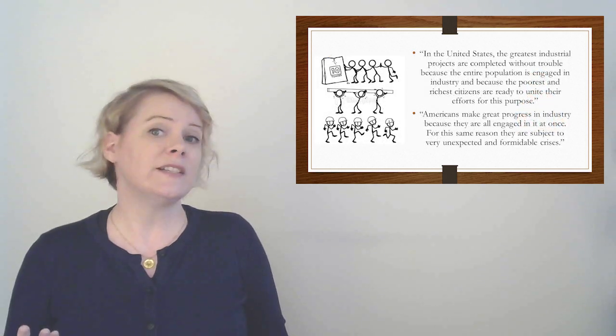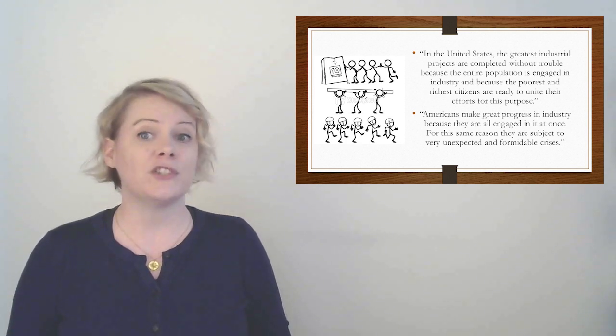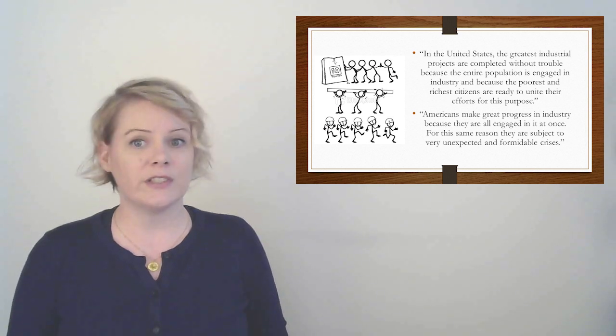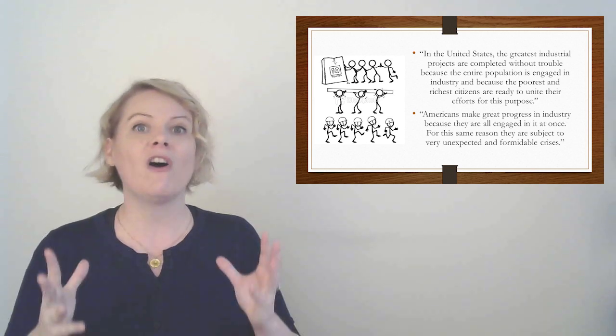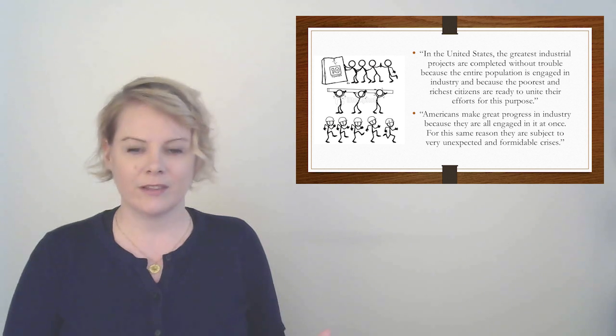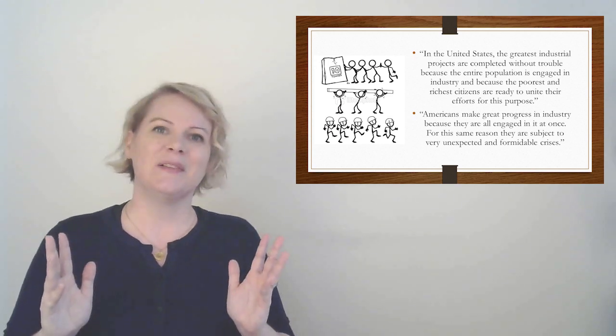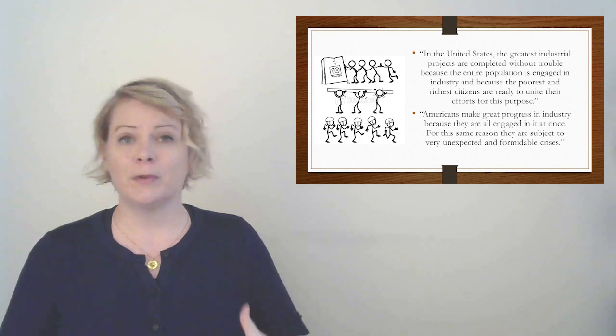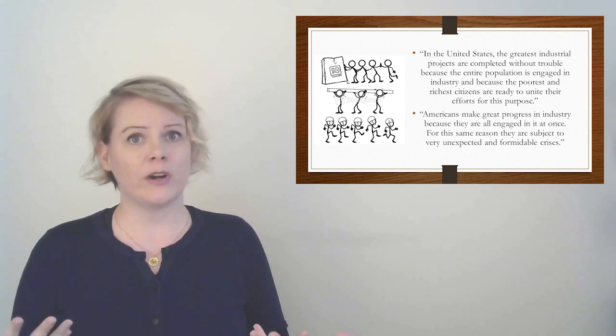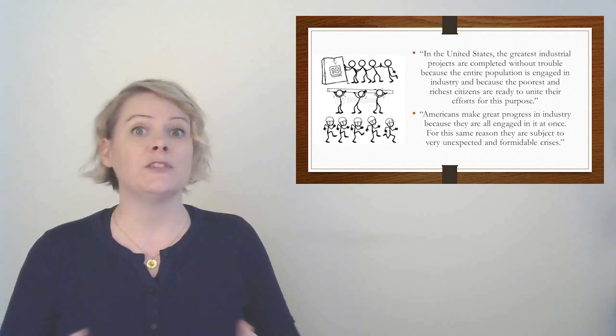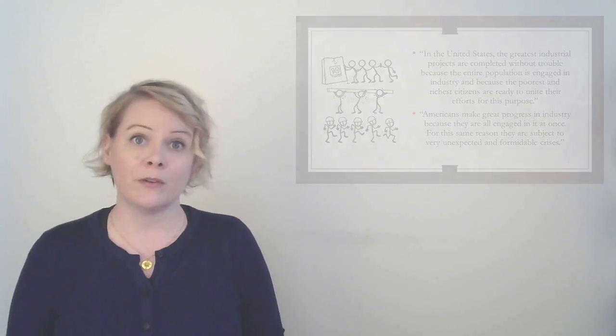And he says, you know, this might be because we're so young. It is only 50 years since the United States emerged from the colonial dependence in which England held it. Right. So he was only in America about 50 years after the revolution. The number of great fortunes is still very small and capital is still scarce. Yet no nation of the earth has made such swift progress in trade and industry as the Americans. And this is true. Americans were uniquely primed to embrace the industrial revolution. We all wanted jobs. We all wanted to get rich. We all wanted to participate in industry. We were not content chilling on our farms. We want in on the big money. So basically, in the United States, the greatest industrial projects are completed without trouble. Because the entire population is engaged in industry. And because the poorest and richest citizens are ready to unite in their efforts to this purpose. Americans make great progress in industry because they are all engaged in it at once. For the same reason, they are subject to very unexpected and formidable crises, which we'll talk about in a second.